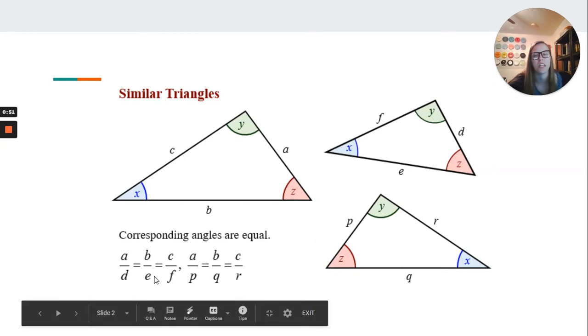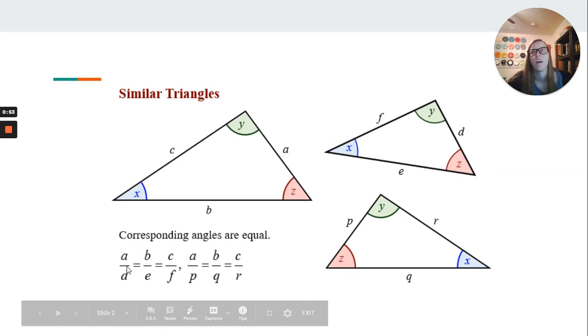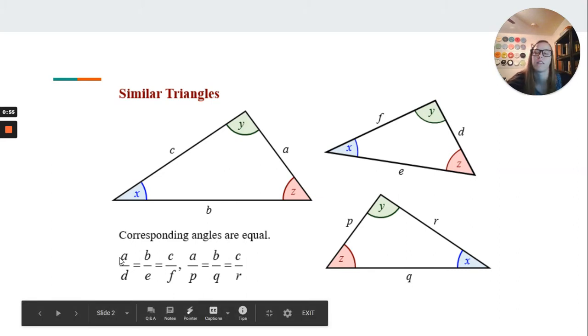So basically if you were to put numbers in here, we'd say 3 and 9, 1 and 3, and 5 and 15. All those are equal to one third.